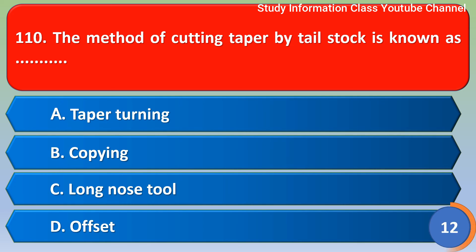Next question: the method of cutting taper by tailstock is known as — the correct answer is option D, the offset method.